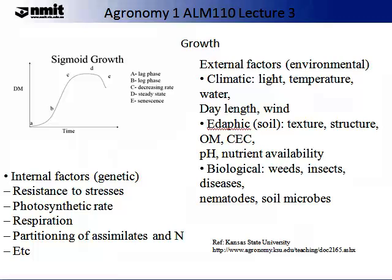There are many external factors that affect the sigmoid growth curve. These include the climate — particularly light, temperature, and water — the day length and wind. The soil texture, structure, pH, and nutrient availability are also impacted. The biological impact such as weeds, insects, diseases, nematodes, and soil microbes can also have an impact on growth. There are also internal or genetic factors which can impact on the sigmoid growth curve, including resistance to stresses, the inherent photosynthetic rate, respiration, and partitioning of assimilates and nitrogen.